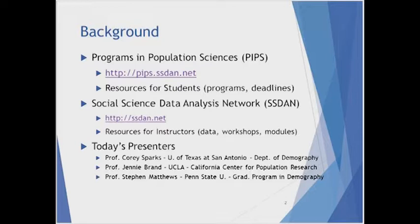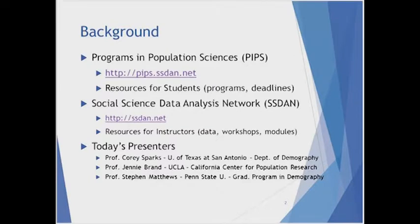PIPSS is part of a larger program called the Social Science Data Analysis Network, or SSDAN for short. SSDAN was started in the mid-1990s by Director William Fry, a professor at the University of Michigan and Senior Fellow of the Brookings Institution. SSDAN aims to make data more accessible for use in education, especially at the undergraduate level. We also promote graduate studies and careers in the population sciences.